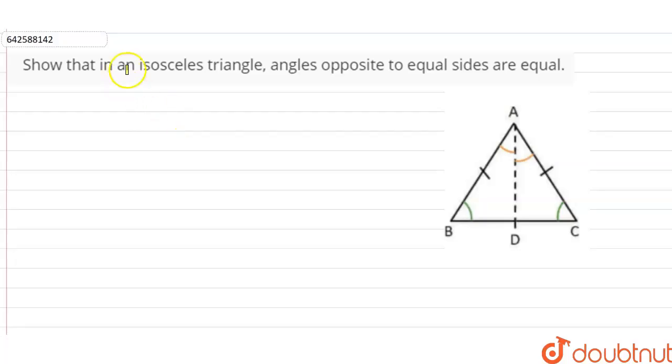Hi students, our question is show that in an isosceles triangle, angles opposite to equal sides are equal.